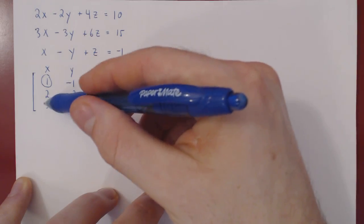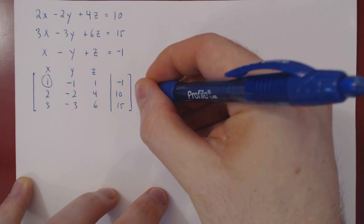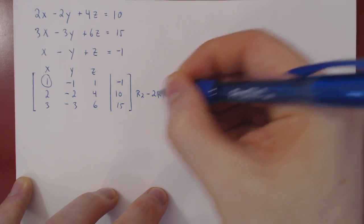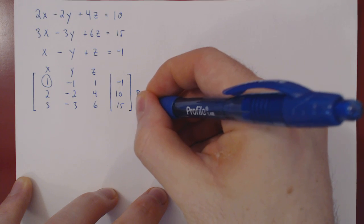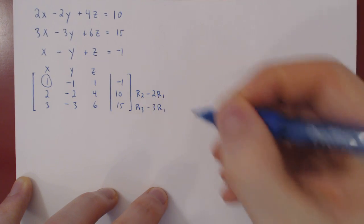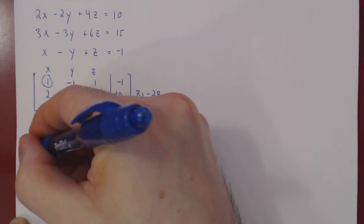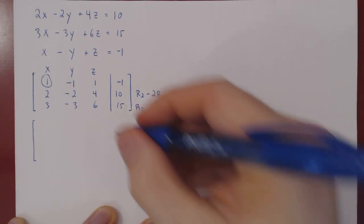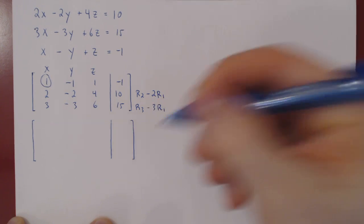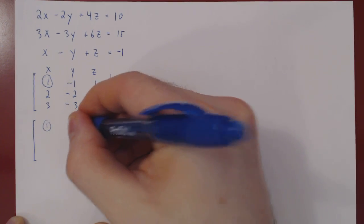The third row is three, negative three, six, fifteen. We already have our leading one and now we can kill the entries below it. We do row two minus two times row one, and row three minus three times row one. We recopy the first row as we are not changing it.